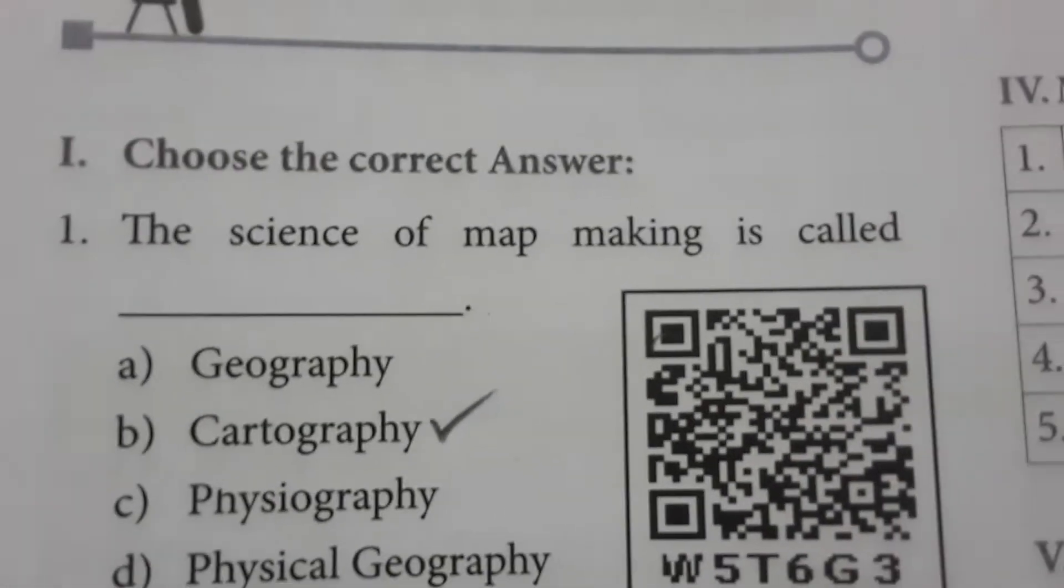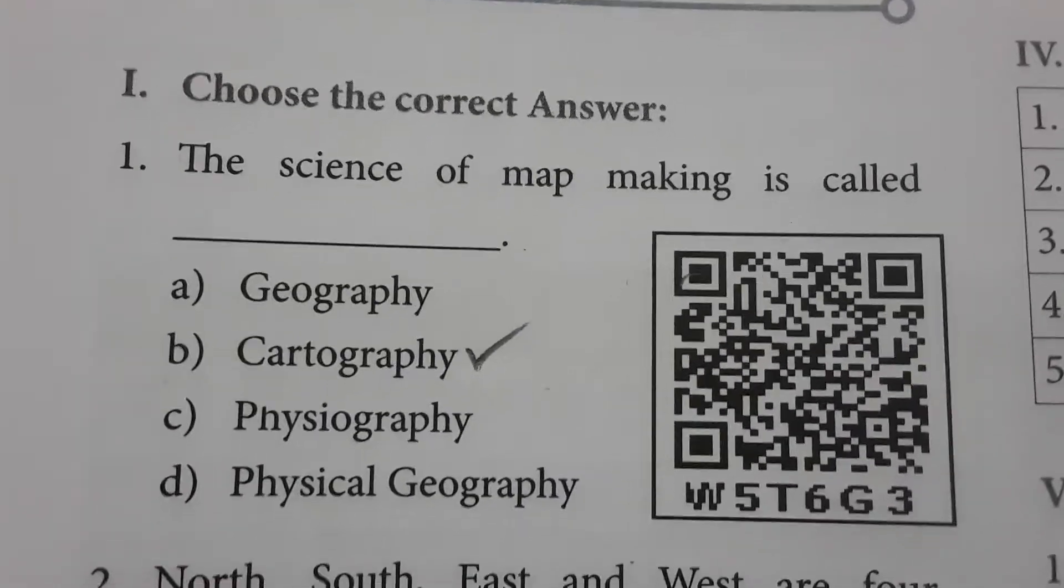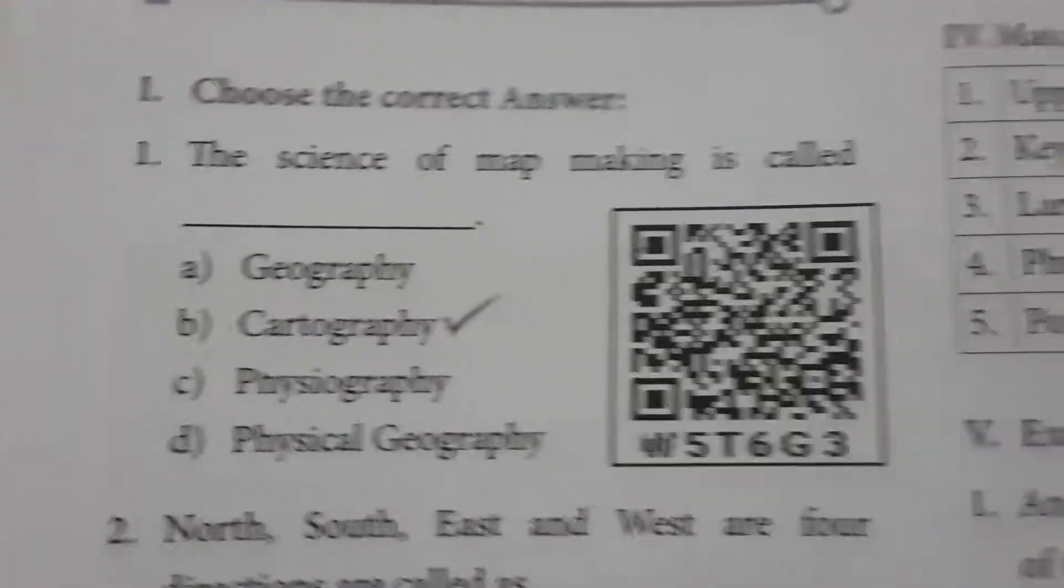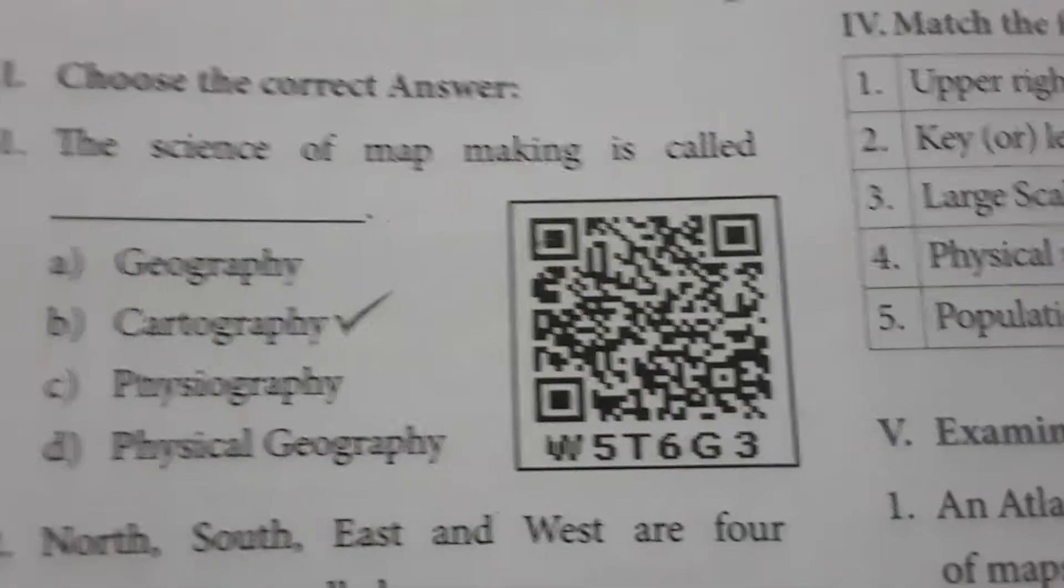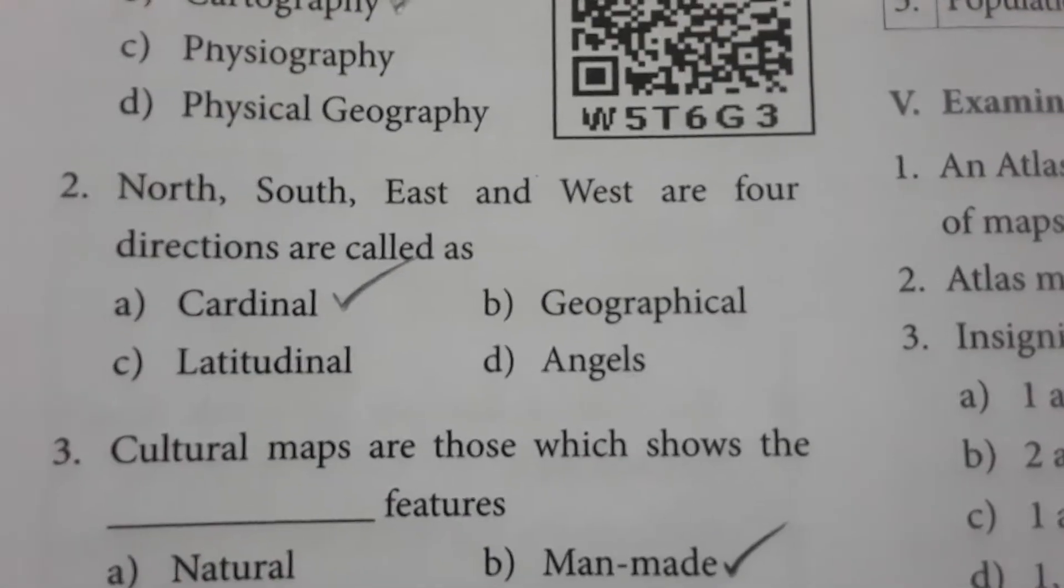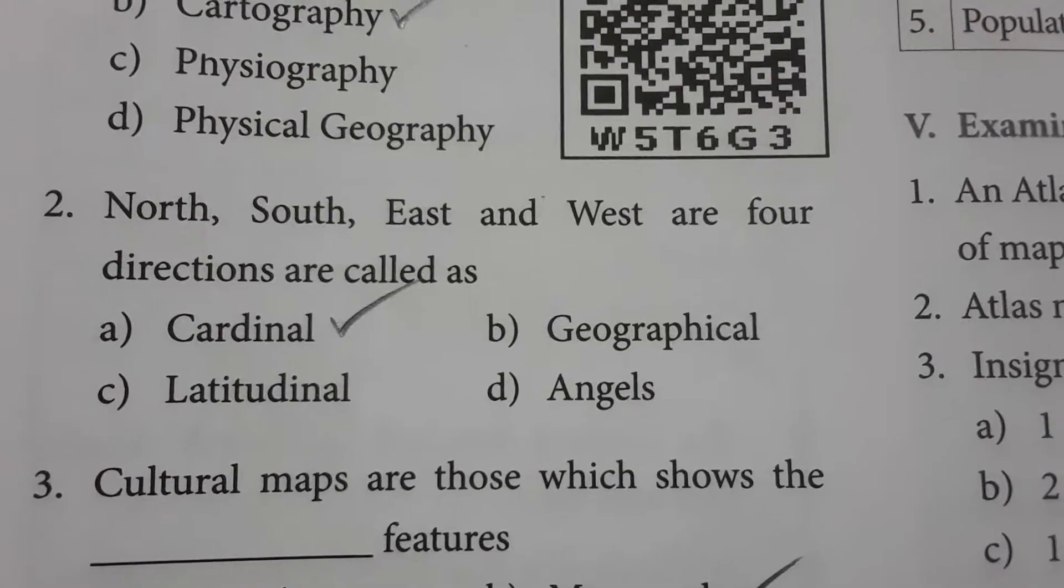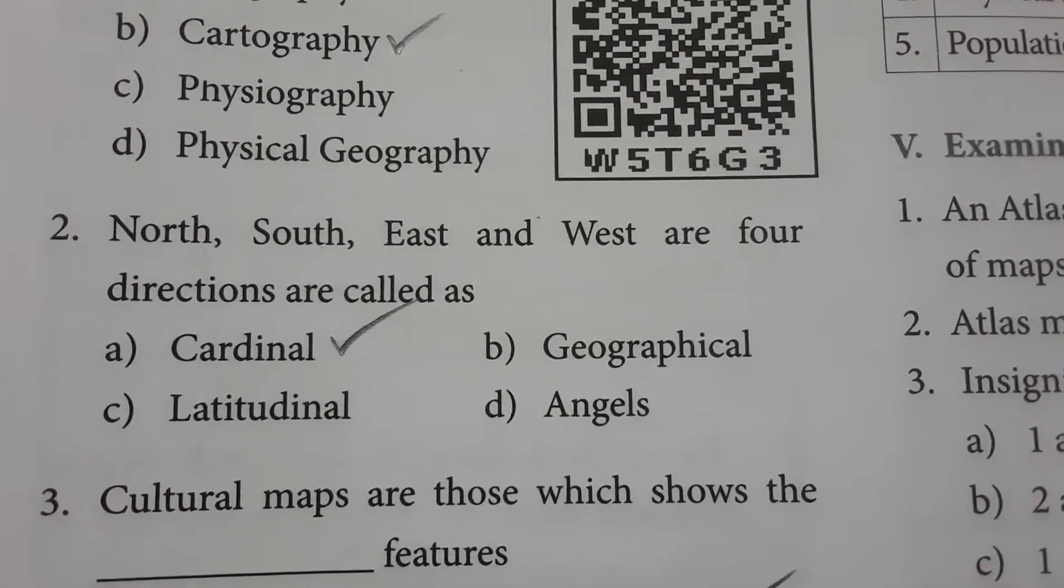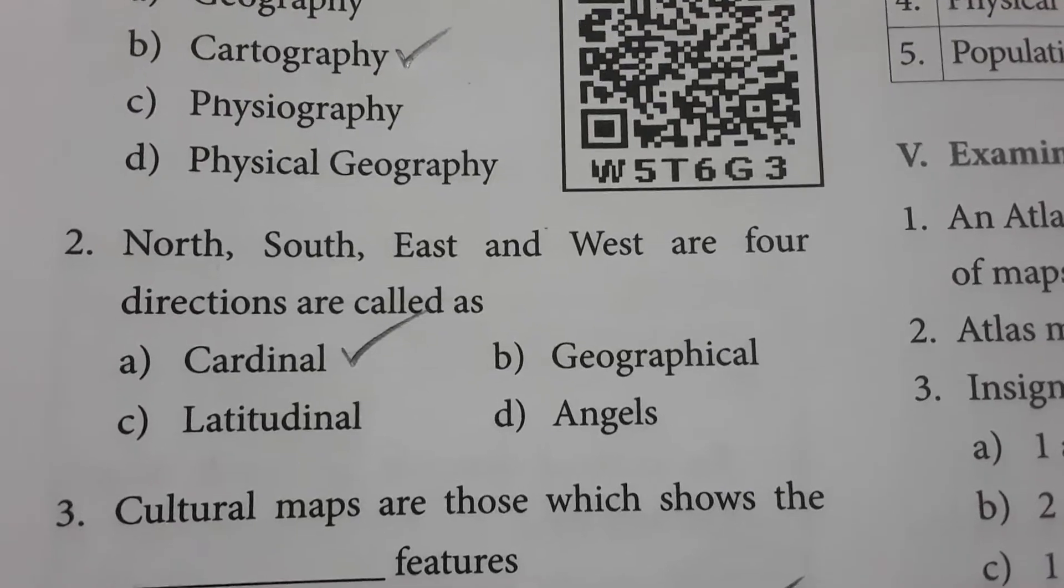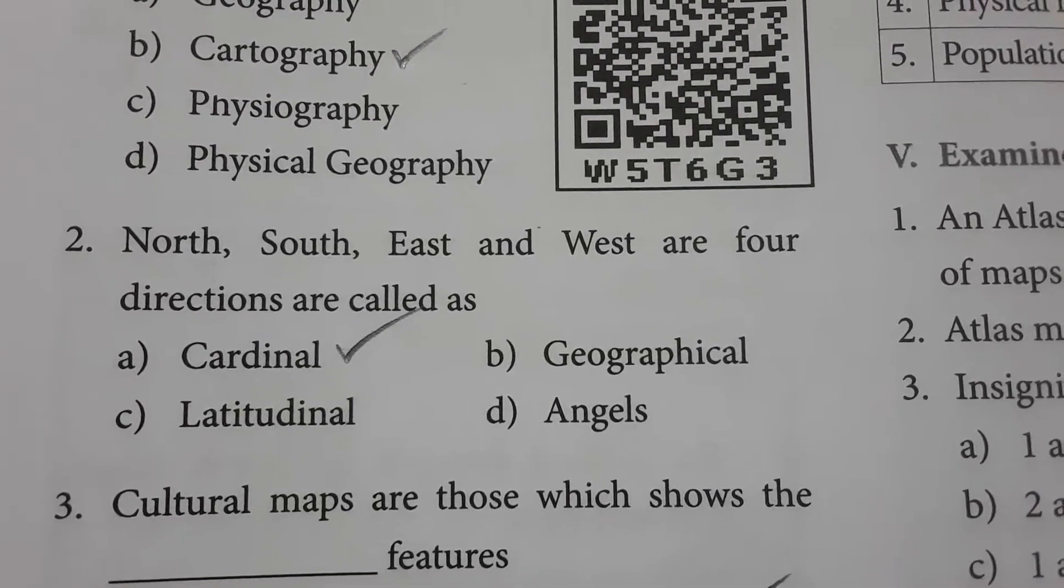Let's see the book pack evaluations. The science of map making is called cartography. North, South, East, and West are four directions that are called cardinals. These directions are also called cardinal directions.